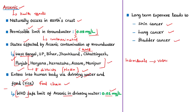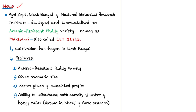Scientists from the Agriculture Department of West Bengal and the National Botanical Research Institute have developed and commercialized a paddy variety. The specialty is that this variety is resistant to arsenic — even if the soil or groundwater is contaminated, this paddy variety absorbs very less arsenic compared to other varieties. This variety is called Mukto Shri, also known as IET 21845.